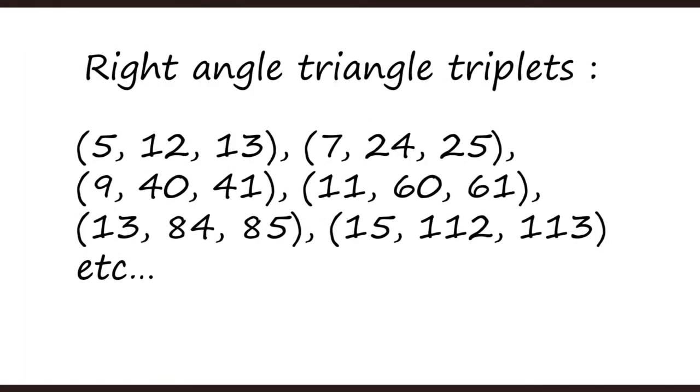A 3-4-5 triangle is a right-angle triangle since 3² + 4² = 5². Multiples like 6-8-10 and 9-12-15 also form right-angle triangles. Other standard Pythagorean triplets include 5-12-13 and 7-24-25, and there are many more such pairs.